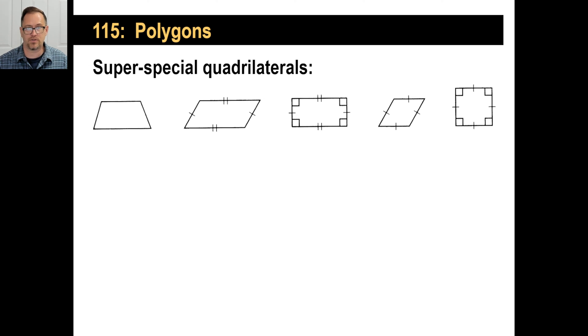And these are not just special quadrilaterals, they're super special. You should know the names of these. They're in your book, and make sure that you have this down. So pause it and go look in your book. Let's just look at these together. On the left you have, it's called a trapezoid, and a trapezoid has one pair of parallel sides.